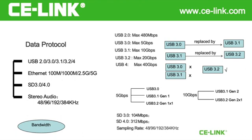There are different versions of SD. The most common ones are SD 3.0 and SD 4.0. The maximum bandwidth of SD 3.0 is 104 MB per second, and for SD 4.0 it's 312 MB per second.